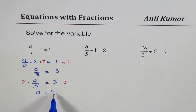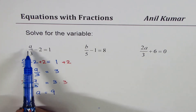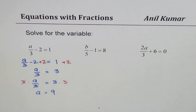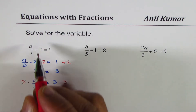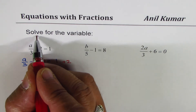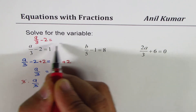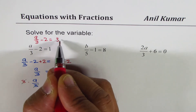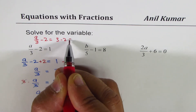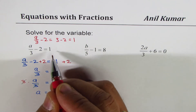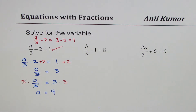You can always check. If I write 9 here, I get 9 over 3 minus 2. 9 over 3 is 3, and 3 minus 2 is 1. So that is correct. It's a good idea to check also. Now let's do the next one.